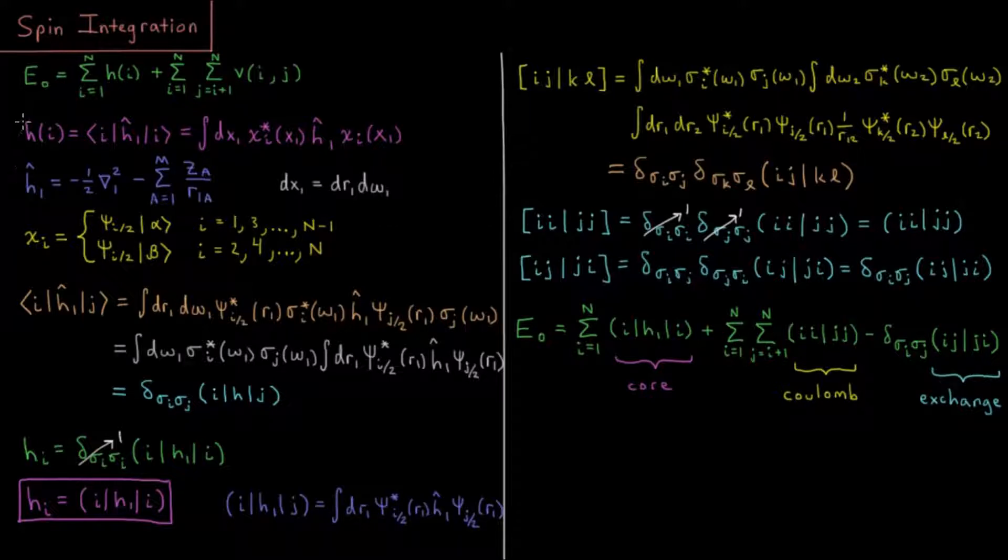We saw from the one electron integrals video that this core energy of an electron is this Dirac notation integral, which is the integral over its x, y, z, and spin coordinates of its spin orbital chi star i times chi i, where we have this core Hamiltonian operator acting on our spin orbital. This one electron core Hamiltonian operator is its kinetic energy operator, negative one-half del squared 1, minus sum over all the nuclei a equals 1 to m, of the charge of that nucleus in number of protons, za over r1a, how far the electron is from that nucleus.